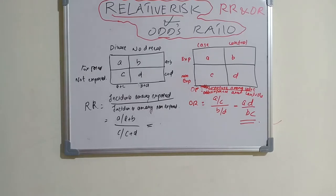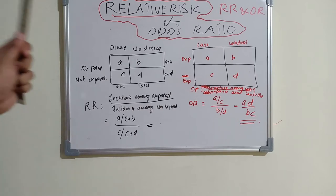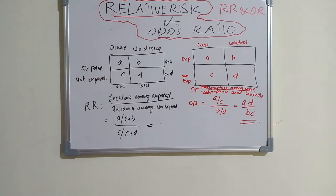Hello everyone, welcome back to the revision series in dentistry. Today's topic is related to relative risk and odds ratio — the most confusing part of epidemiology, and the calculation is also a little bit tricky.